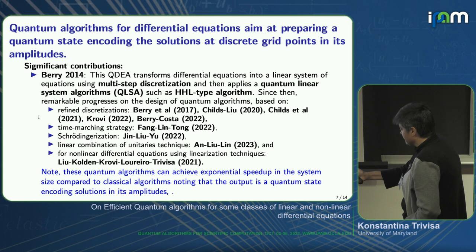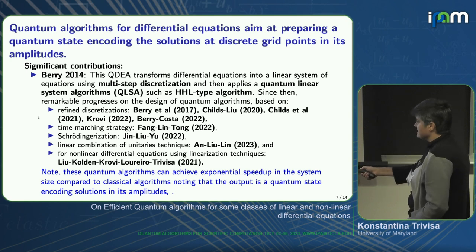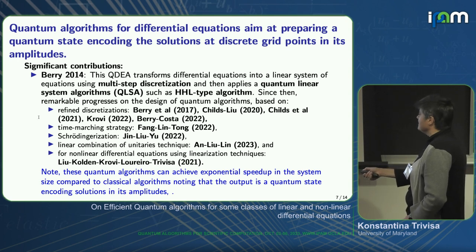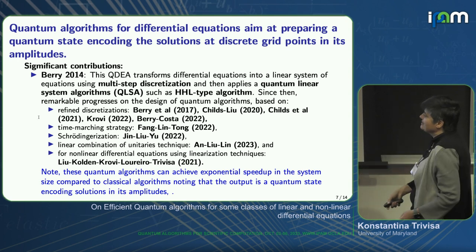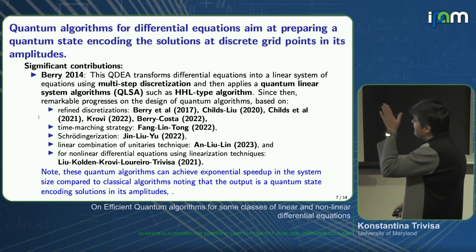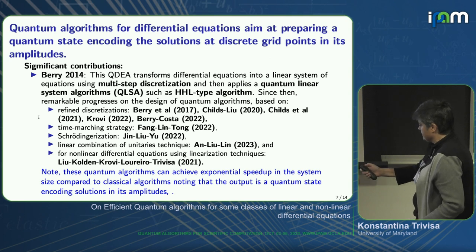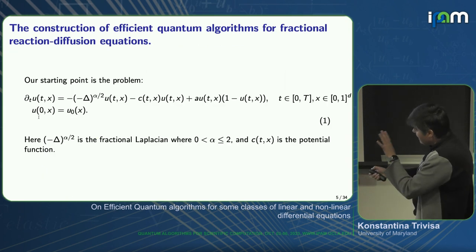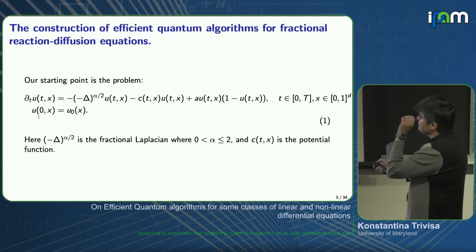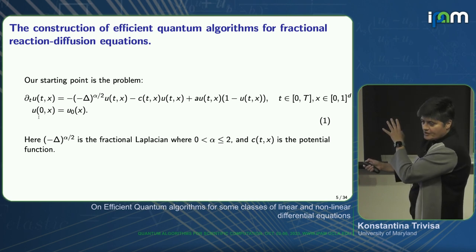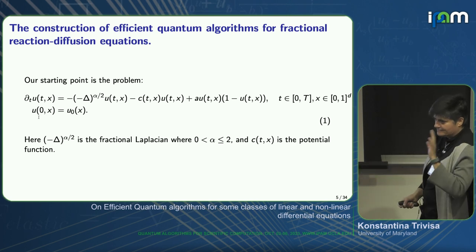The quantum algorithms presented above can achieve exponential speedup in the system size compared to classical algorithms. One has to keep in mind that the output is not a solution in the classical sense like x equals something, but rather a quantum encoding of the solution in the amplitudes. Now I am going to introduce the nonlinear fractional diffusion equation that we decided to work on when Dong An joined Maryland.